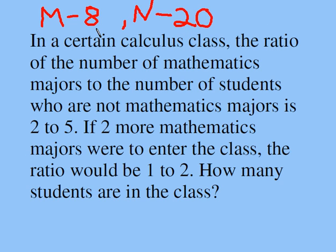Now, if you add in two more math majors, you will have 10 math majors. And the ratio of 10 to 20 is 1 to 2. So our answer has to be correct. That's the beauty of doing things algebraically. You can always go back and check your answer. And it's always a good idea to check your answer.